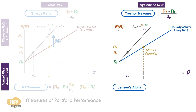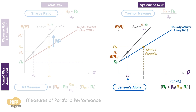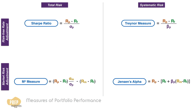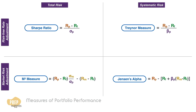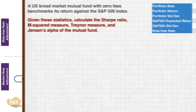Jensen's Alpha is based on systematic risk but market-adjusted. Instead of measuring excess return based on market risk, Jensen's Alpha measures excess return based on the portfolio's beta. Using the Security Market Line, the portfolio's expected return is calculated via CAPM. If the portfolio's actual return exceeds that expected return, Jensen's Alpha is the difference — the portfolio's actual return minus its expected return.